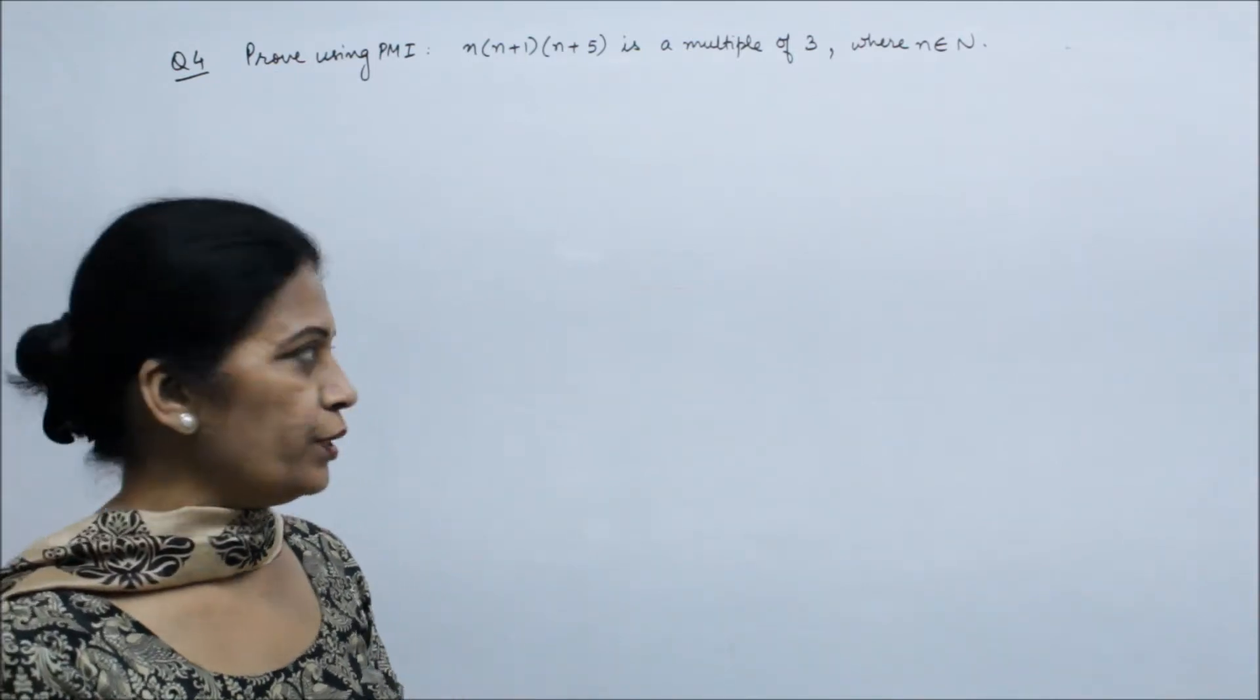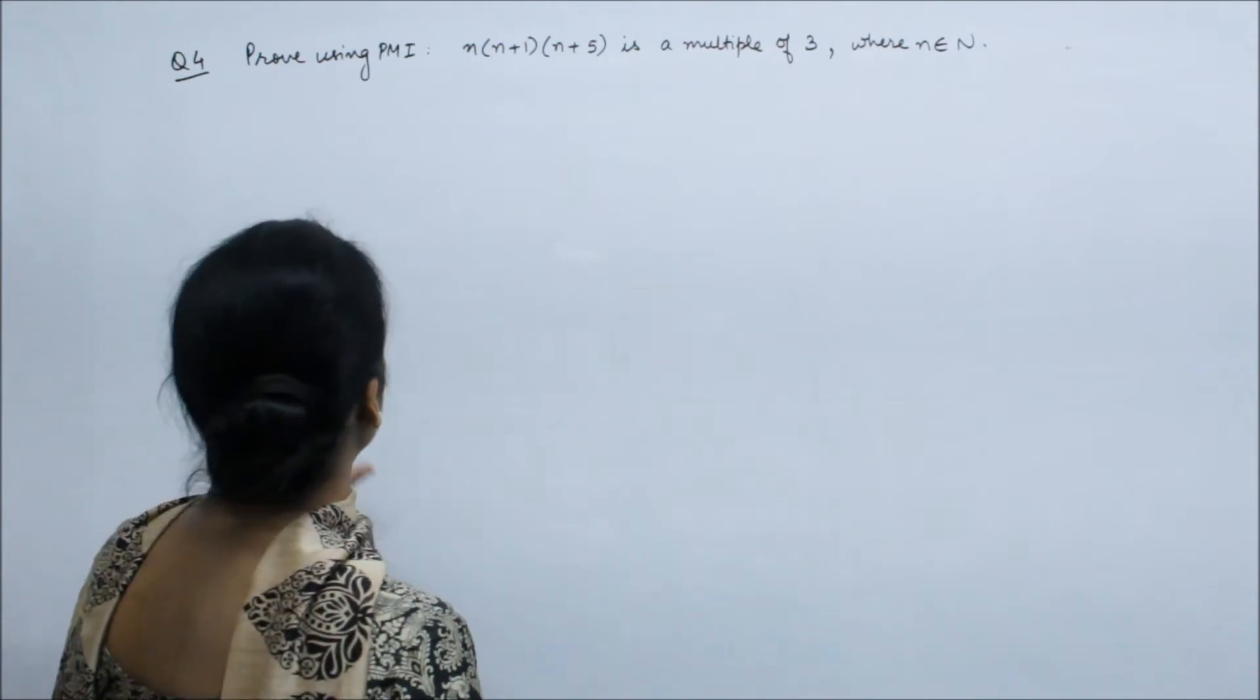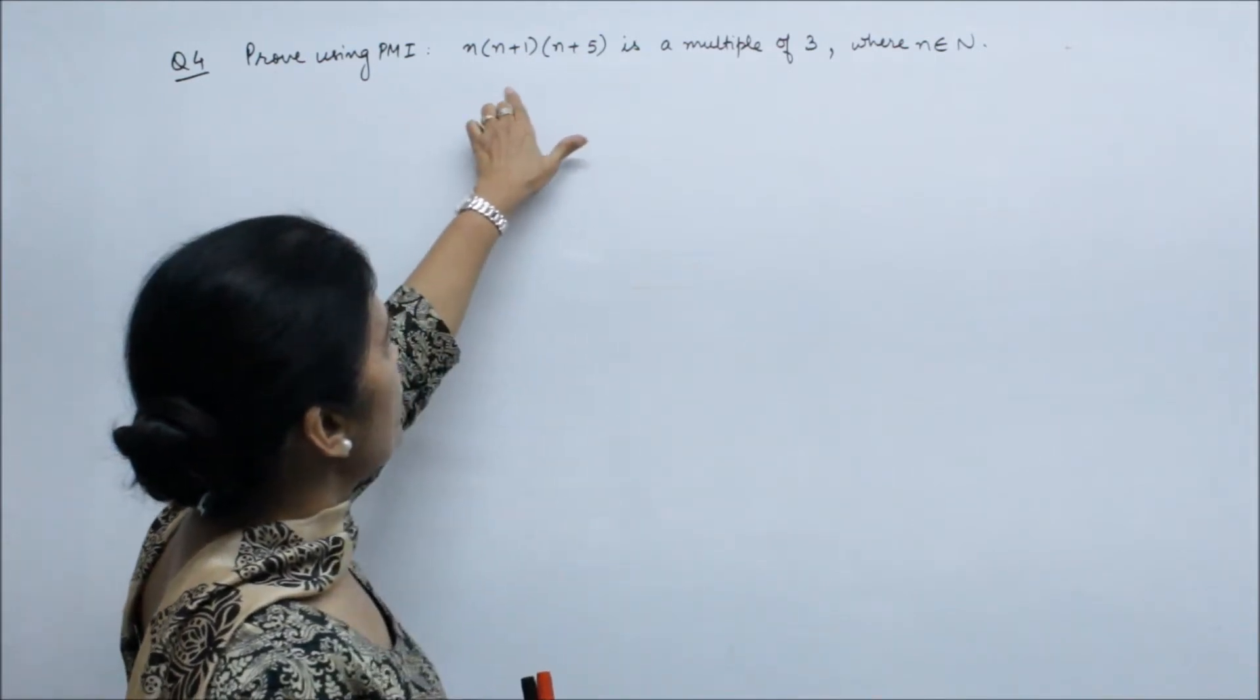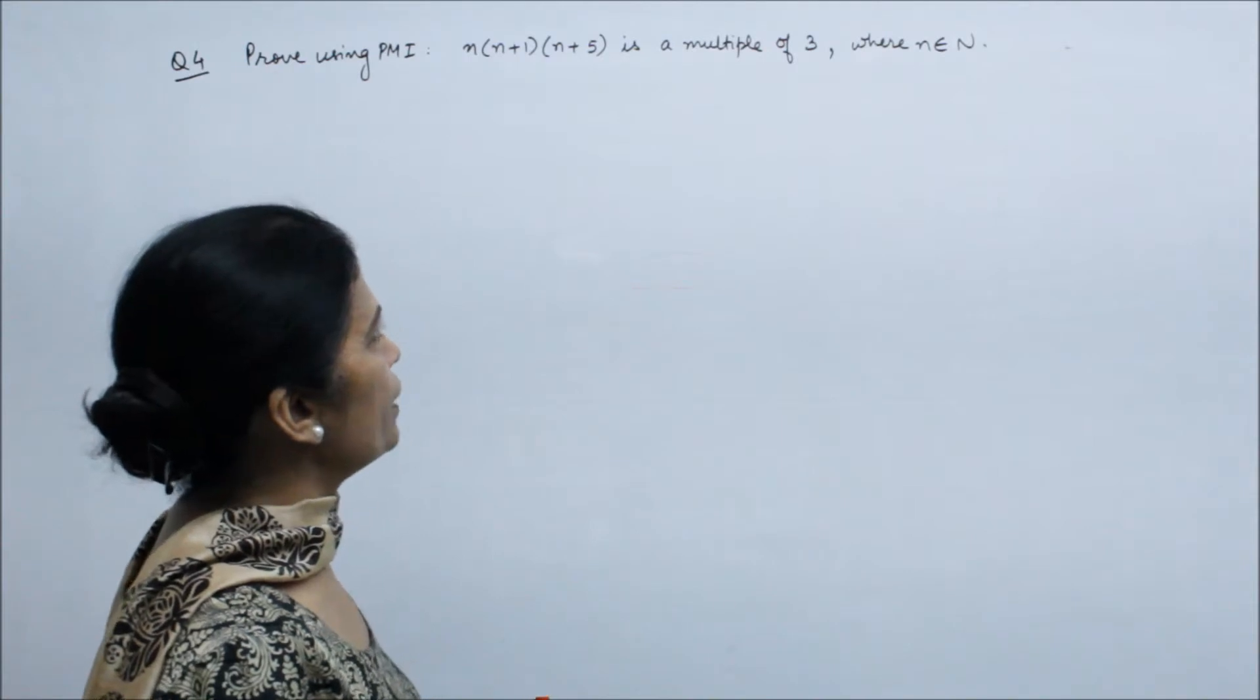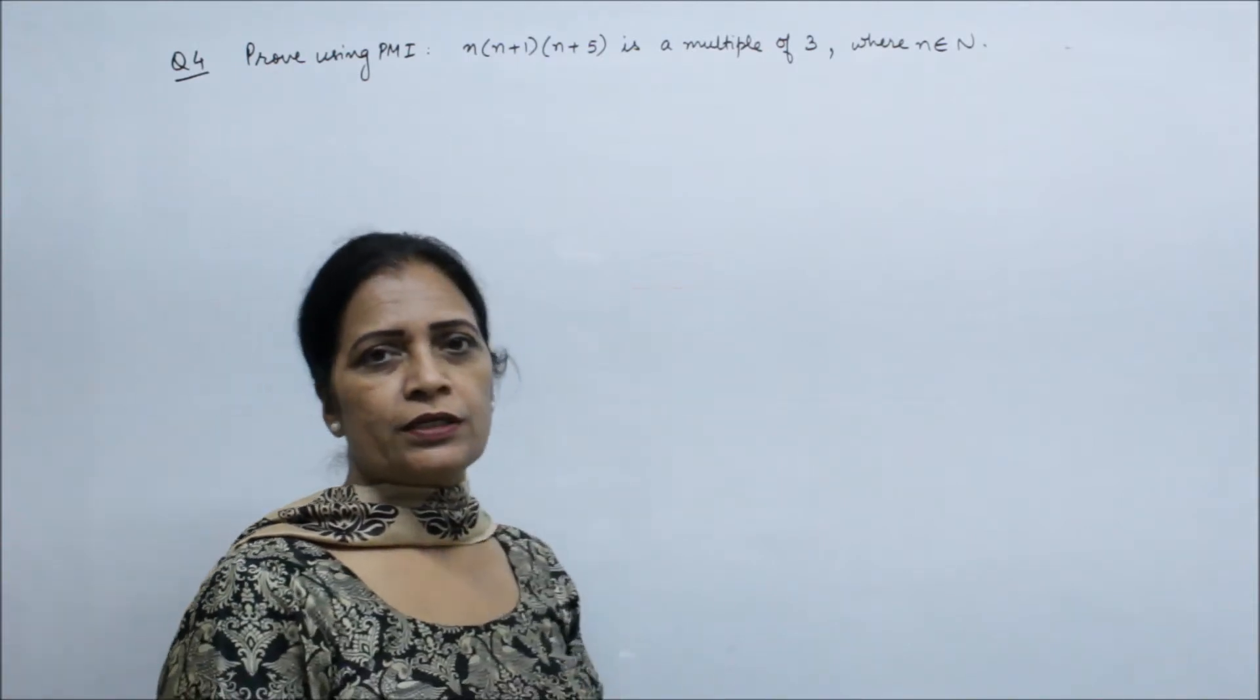Easy questions, there is a lot of scoring. What is the question? Prove using PMI that n into n plus 1 into n plus 5 is a multiple of 3, where n is natural number.